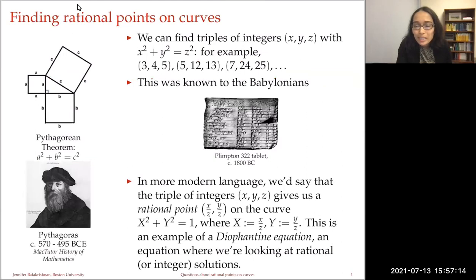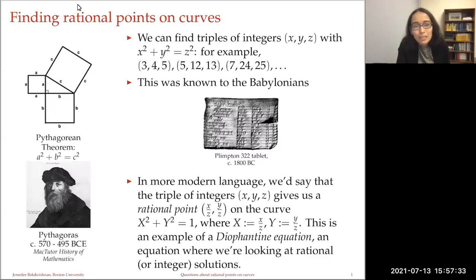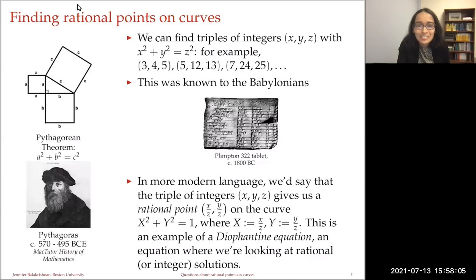One way to frame the question about rational points on curves maybe starts from a long time ago — a question about triangles. We all saw this at some point in school: if we have a right triangle with side lengths a, b, and c, where c is the longest side, then the side lengths a, b, and c satisfy a squared plus b squared equals c squared. We can turn this question around and ask about finding triples of integers x, y, and z satisfying x squared plus y squared equals z squared — for instance, 3, 4, 5 or 5, 12, 13, and so on. In fact, there are many, many triples of integers that satisfy that equation.